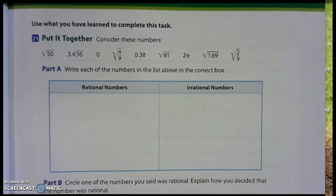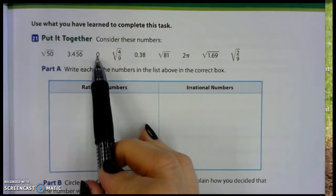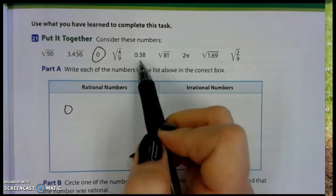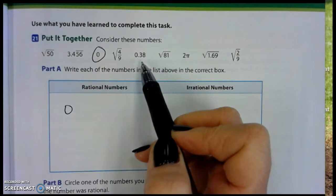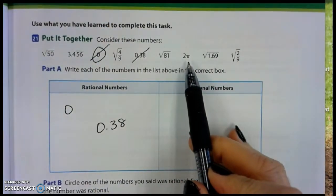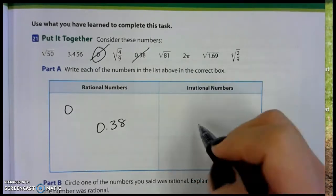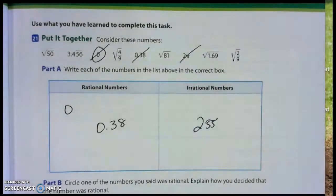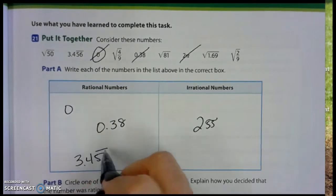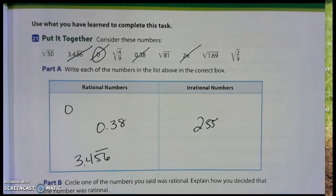On number 21, they want us to put all of these numbers into a category: rational versus irrational. It is either a whole number, a terminating or repeating decimal, or it is an irrational number. Do the easy ones first. Zero. Zero is rational. The next one I see that's super easy is 0.38. I can see the end. It's 0.38. It is rational. Two pi. Pi is not even a number. It's this funky little symbol that represents a number that never ends. Two pi is irrational. And here's a repeating decimal. A repeating decimal is always rational. 3.456 repeating. We're done with that one. That leaves us with four radicals. You have to check them.